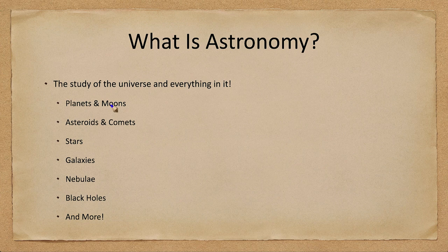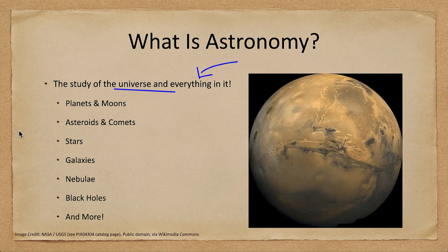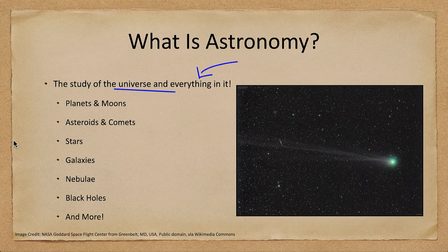Astronomy is the study of the universe and everything in it. We will be looking at a lot of different things in this class, including planets and moons such as the planet Mars and the hundreds of moons within the solar system. We will also look at asteroids and comets — here is an image of a comet as it stretches back across the sky, some of the smaller debris within our solar system.